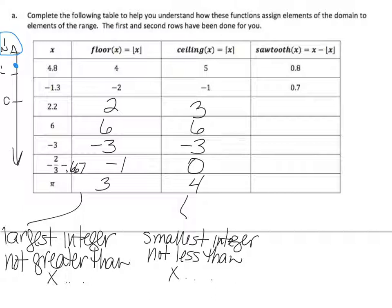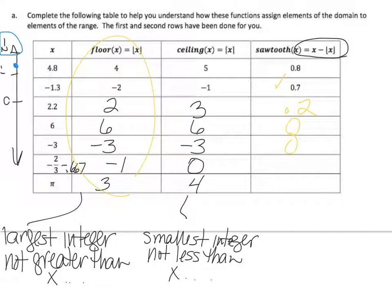Now we're going to do the sawtooth, which is x minus the floor of x. So negative 1.3 minus negative 2 is 0.7. 2.2 minus 2 is 0.2. 6 minus 6 is 0. Negative 3 minus negative 3 is 0. Negative 2/3 minus negative 1 is 1/3. And pi minus 3 is just pi minus 3— I can't round pi, so I can't really calculate it. We need this chart to graph on the next slide.